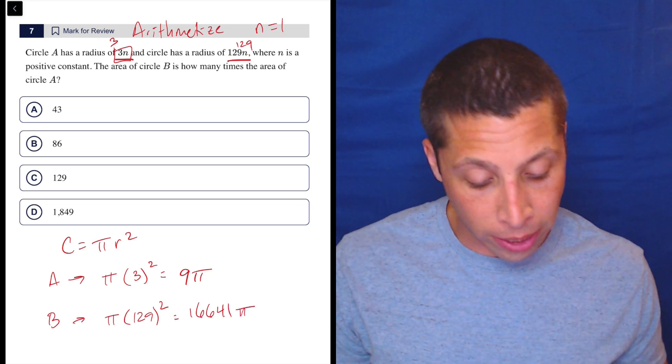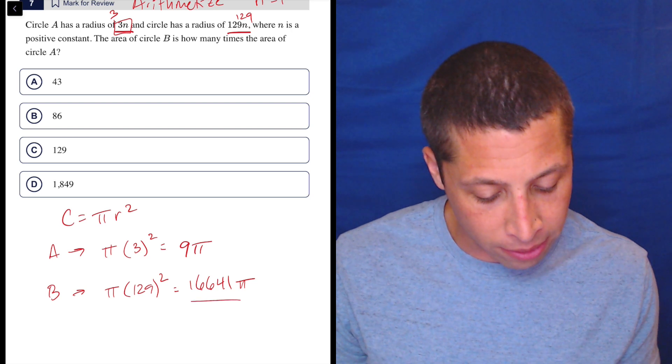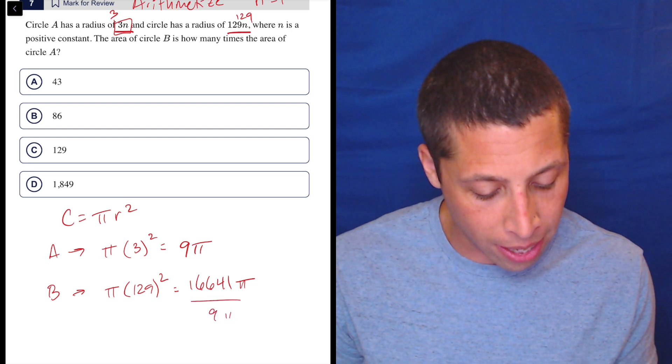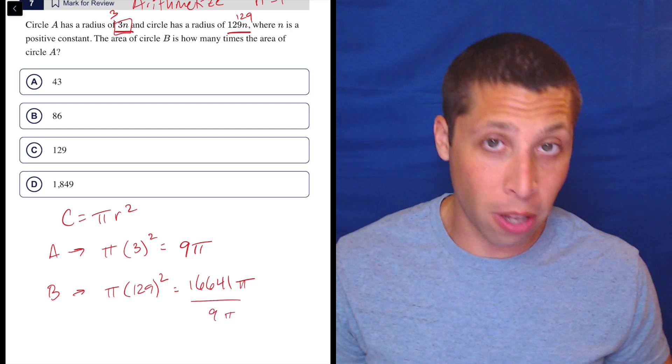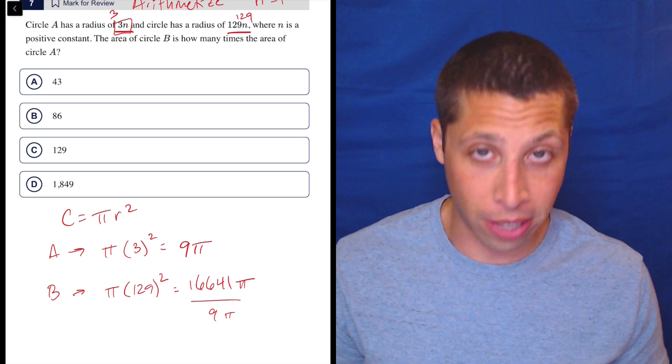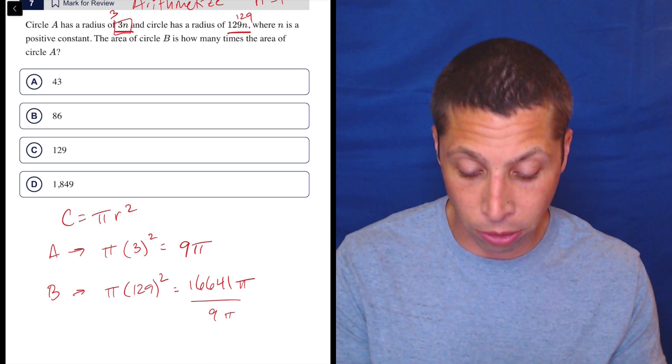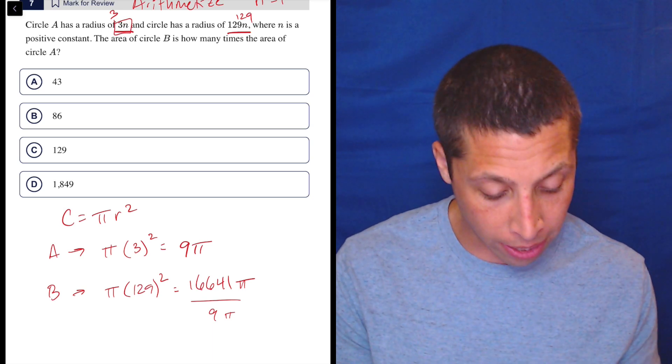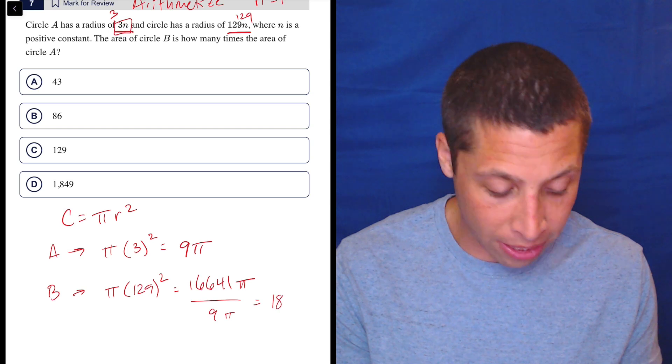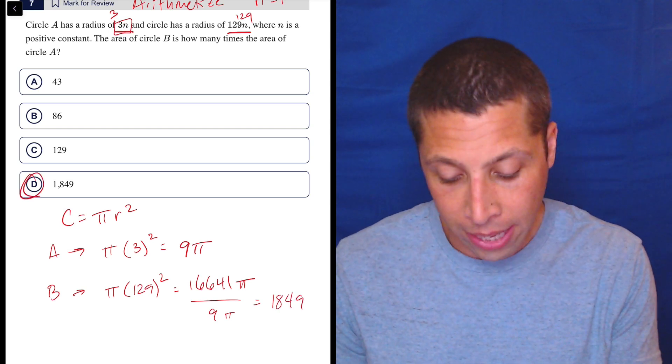So how many times greater is it? Well, just divide at this point. Divide the 16641 by 9. Technically the pis are along for the ride, but we know they're going to cancel and just kind of work themselves out. So I'm just going to do regular divide by 9 in this calculator. And I get that they are 1849 different. That's D.